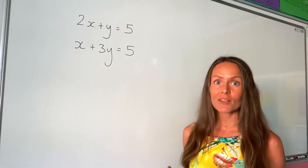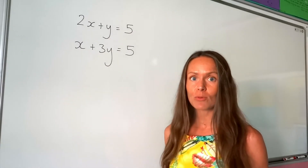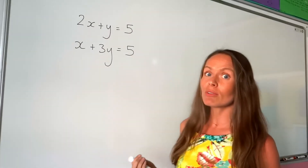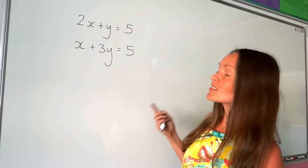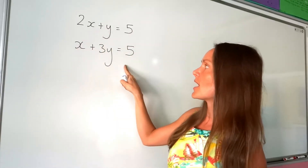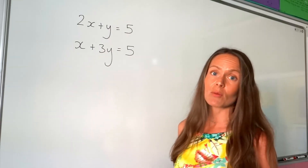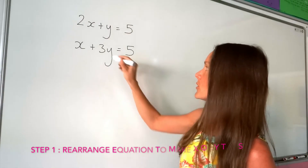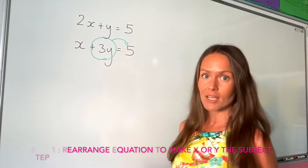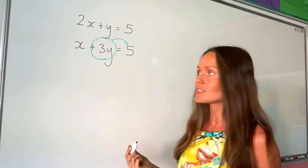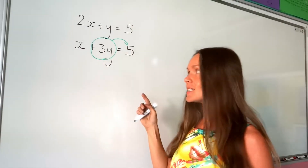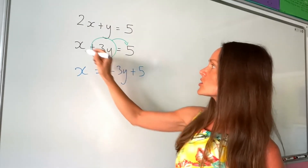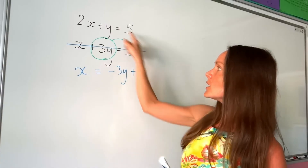Now, in the last example I said that one of the equations needs to be written as either x equals or y equals before you can substitute it into the other equation. Well, that's not the case with these two equations — you need to rearrange one of them first. It doesn't matter which one you choose. I'm going to take this bottom equation and rearrange it to get x by itself. I'm going to move that positive 3y to the other side of the equal sign — when something moves across the equal sign, it changes sign. So this positive 3y will change to a negative, giving x equals negative 3y plus 5.